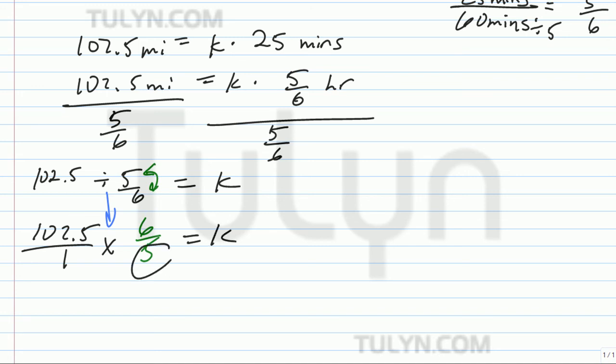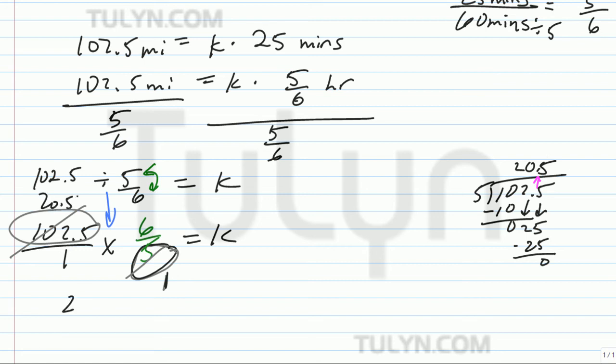Okay, so I see common factors. So 5, 5 divided by 5 is 1. 102.5 divided by 5 is 5 into 1, 0. 5 into 10, twice. 5 times 2, 10, 0. Bring down the 2, 0. Bring down the 5. 5 and 25 is 5, so 5 times 5 is 25, minus 0. So bring back the decimal.